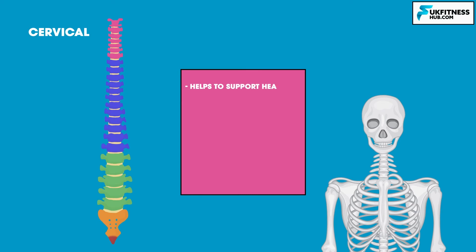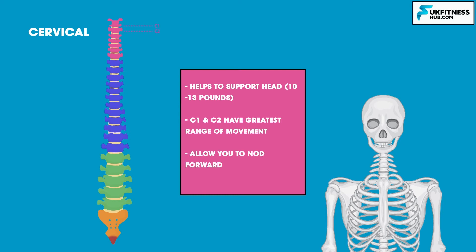The cervical vertebrae of your neck help to support your head, which weighs between 10 to 13 pounds. C1 and C2 have the greatest range of movement and allow you to nod your head forward and back as well as rotate from side to side. The average thickness of the cervical vertebrae is 3 millimetres, whereas the thoracic vertebrae is 6 millimetres and lumbar 9 millimetres. Cervical vertebrae sacrifice strength for mobility.